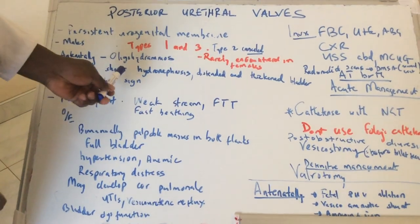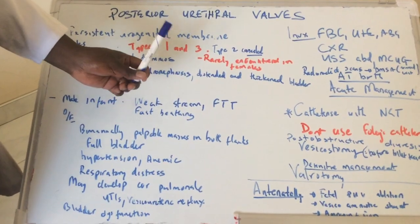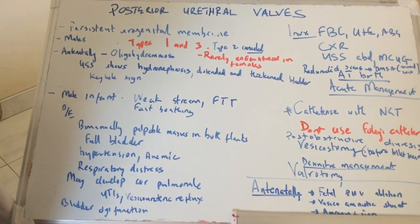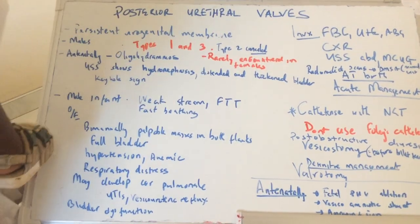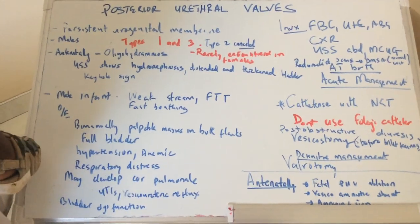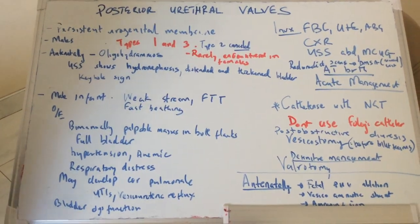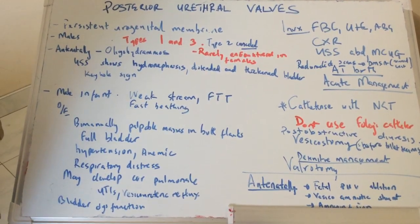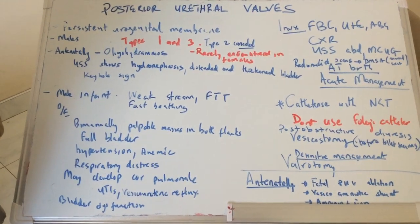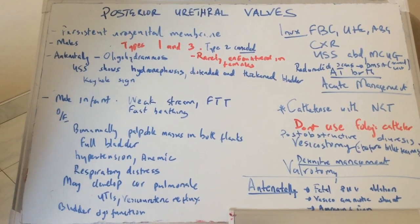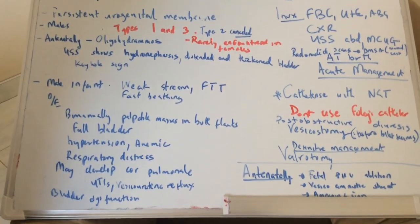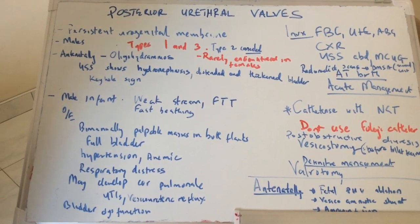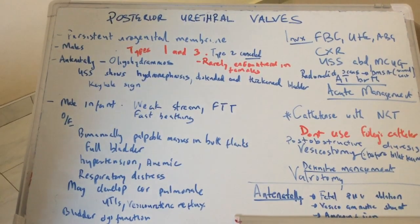The scan can also show hydronephrosis, which is distension of the kidneys from accumulation of fluid. The bladder will be distended and can have a thickened wall, from hypertrophy as the bladder contracts and actually hypertrophies. There is also a keyhole sign, because the urethra is distended at the proximal part but narrows at the valve — giving it the appearance of a keyhole, a distended part and a smaller thin part.